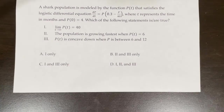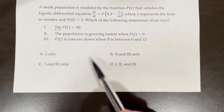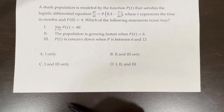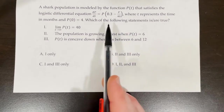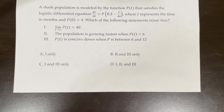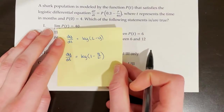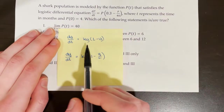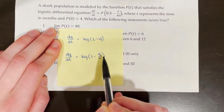Next problem: A shark population is modeled by dp/dt equals p times (0.3 minus p over 40), where t represents time in months and p(0) equals 4. Which of the following statements is or are true? The first thing to note is that this differential equation is not in either of my standard formats, so I need to rearrange it.